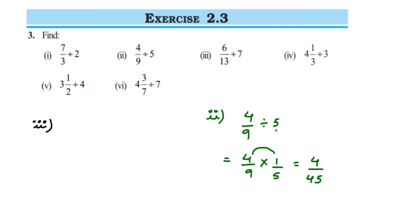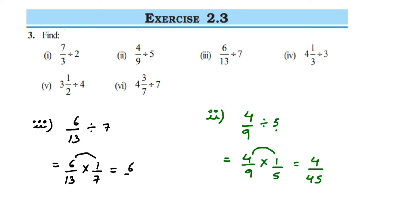Third question: 6/13 divided by 7. The first number 6/13 remains the same, division becomes multiplication, and the reciprocal of 7 is 1/7. We cannot cancel here, so multiply: 6 × 1 = 6 and 13 × 7 = 91. The answer is 6/91.